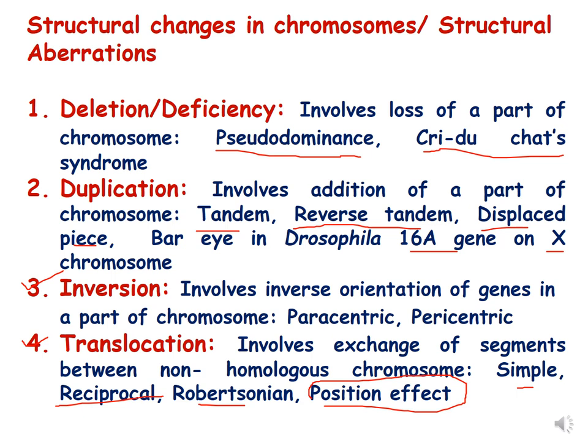The fourth kind of structural aberration is called translocation, which is also called illegitimate crossing over. It involves exchange of segments between non-homologous chromosomes. It is of two types: simple and reciprocal. Robertsonian translocation is an example of translocation, and position effect also comes under translocation.